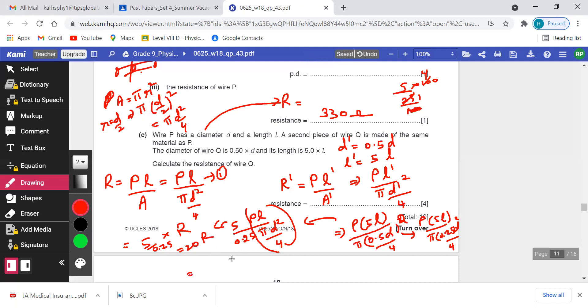So what is R actually? 330 ohms. So 20 times 330 is 6600 ohms. This is the value of resistance in wire Q.